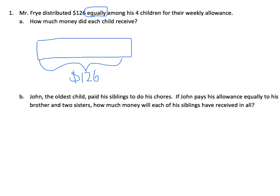He's distributing that equally among his four children, so on my tape diagram I will have four sections: one, two, three, four. What I need to figure out is how much each child received from that $126. From this tape diagram, I can see that my total amount is $126, and I'm dividing that up into four equal parts.